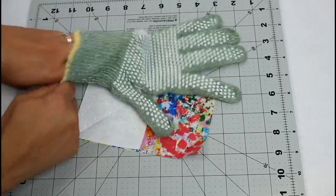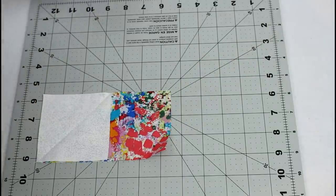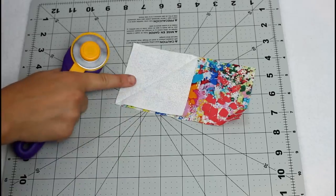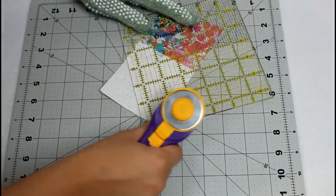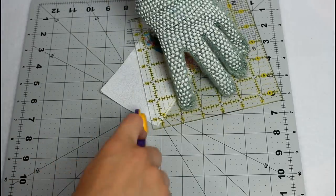I pop on my rotary safe glove and get my ruler and rotary cutter out. Then I trim away the corner of each rectangle leaving a quarter inch seam allowance. It's the corner where the white bit will flip over and cover later.